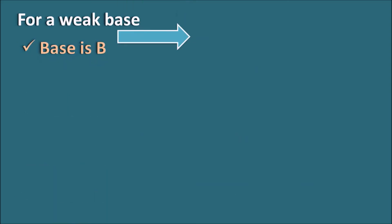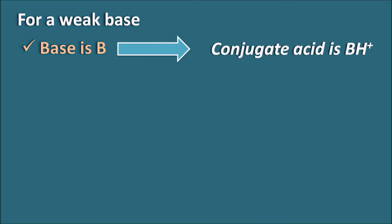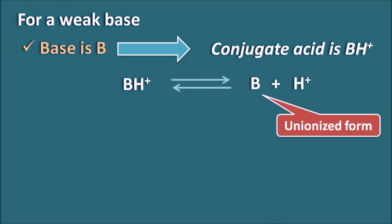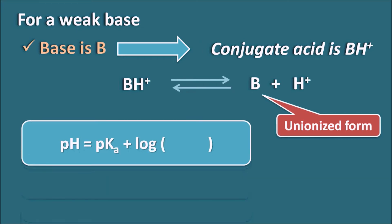Now let us look at a weak base, denoted as B. This base is converted into its conjugate acid BH⁺ — it is protonated, because a base can easily take protons. BH⁺ is a weak electrolyte and is not completely dissociated; it achieves equilibrium and can convert back to B + H⁺. Here B is the unionized form of the base and BH⁺ is the ionized form. Using the Henderson-Hasselbalch equation: pH = pKa + log([B]/[BH⁺]), that is unionized over ionized.